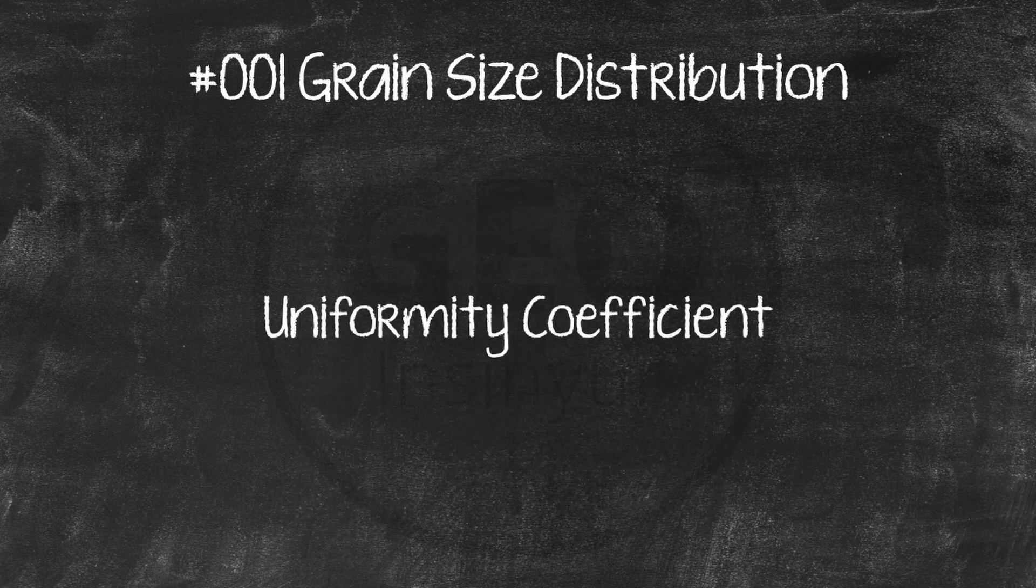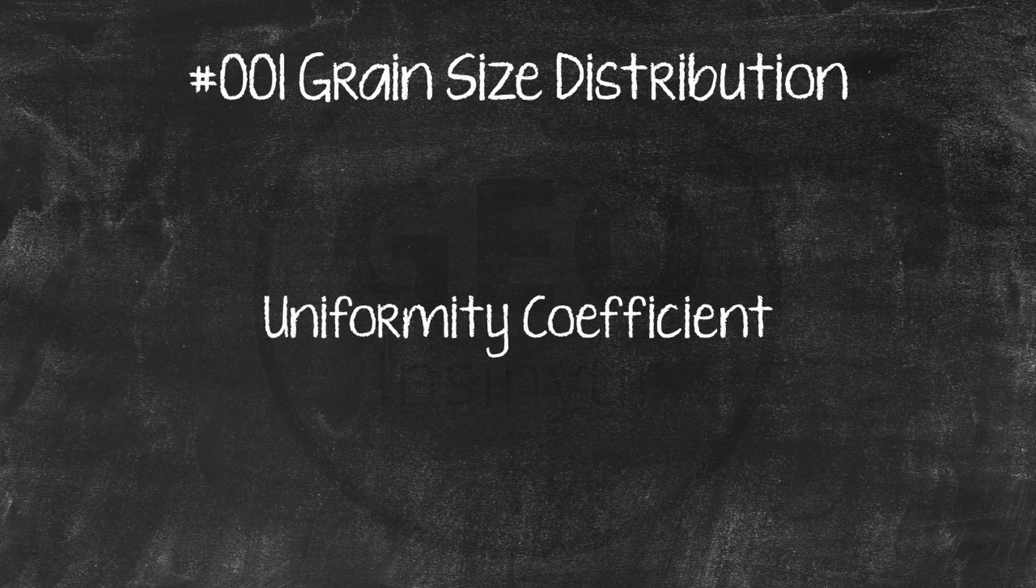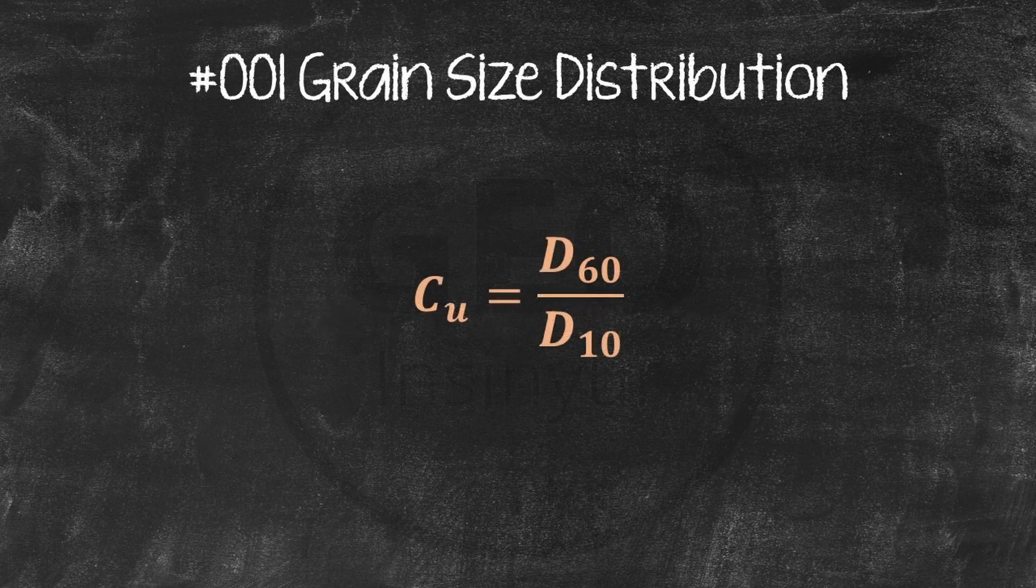The uniformity coefficient, Cu, defines the slope of the curve with higher values corresponding to a flat curve with a mild slope. This is typical of well-graded soils. The Cu value is d60 divided by d10.